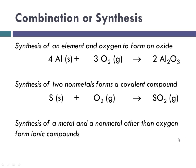Synthesis of a metal and a nonmetal other than oxygen to form ionic compounds. So again here, aluminum and chlorine. Notice oxygen is not involved. It's still a metal with a nonmetal, so we're still going to form a binary ionic compound.